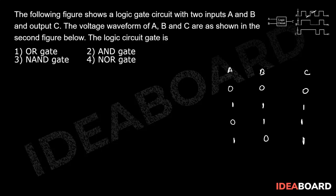After analyzing this truth table we can tell that this is the truth table of OR gate. So option number first is the correct answer of this problem.